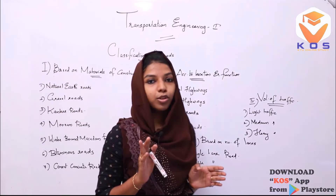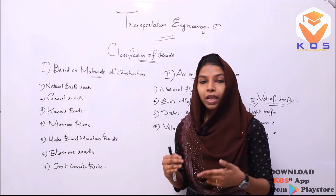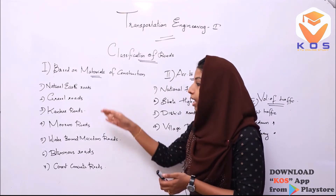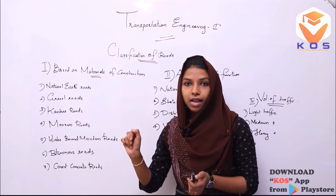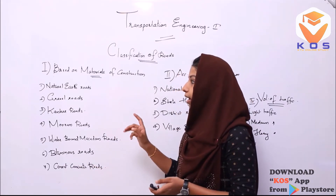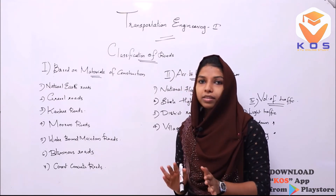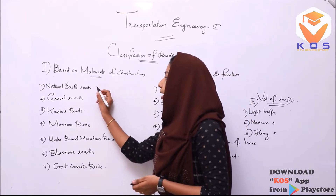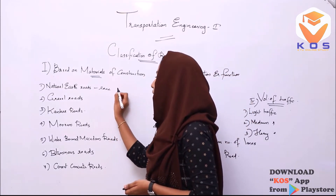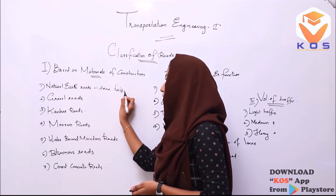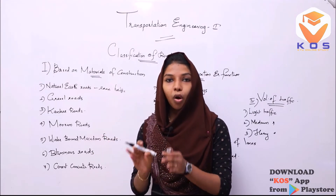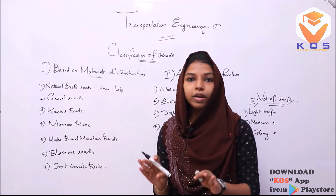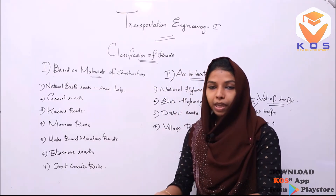The first classification is based on materials used for construction. Under this, we classify 7 types. The first one is natural earth roads. Natural earth roads are used for rare or low traffic. If we construct that, we already have soil, and we construct a pavement on that soil.